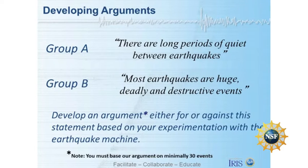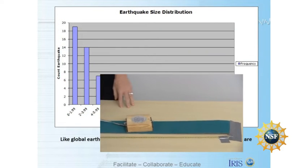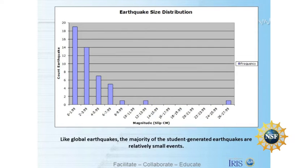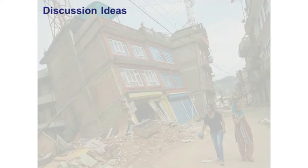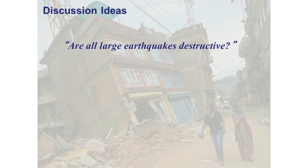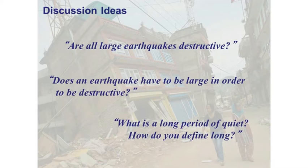Now if we think about Group B's question — 'most earthquakes are huge, deadly, and destructive' — we determined that was related to magnitude, which was how much the block was going to slip. Looking at that data, the majority of these earthquakes were pretty small events, which is what you'd expect: lots of smaller events with the occasional large event. It's also important to discuss the language and vocabulary here. Are all large earthquakes destructive? Does an earthquake have to be large to be destructive? What exactly do we mean by long periods of quiet — geologic time or human time? Make sure students are engaging with this on several levels.